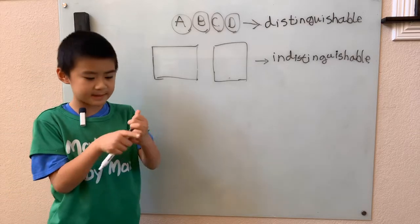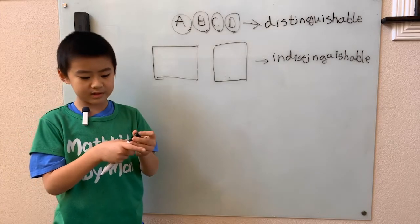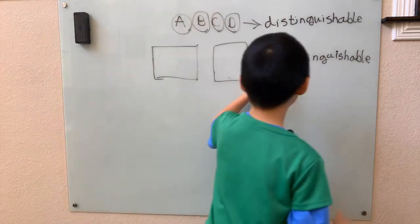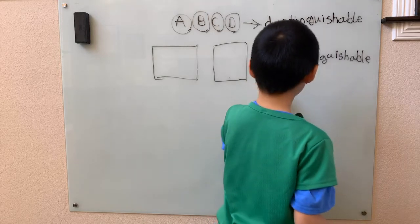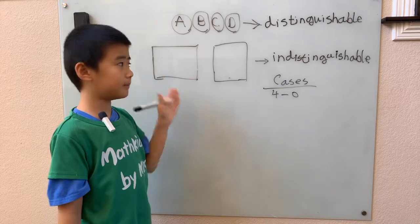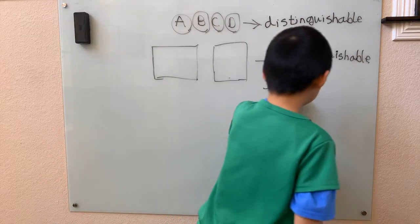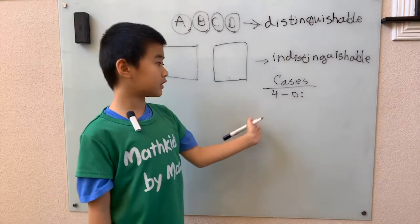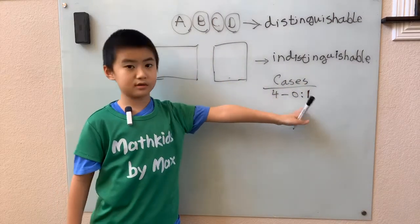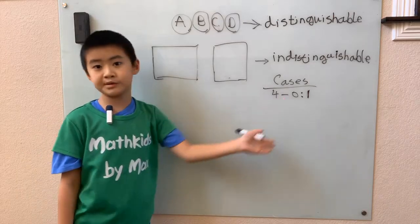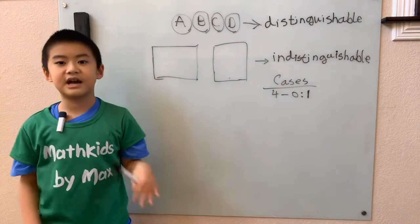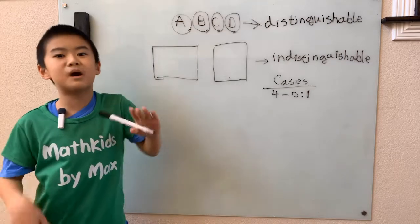Casework just means there are some things that could happen and we count how many ways each case could occur. So if I have the balls arranged four to zero — four balls in one box, zero balls in the other — that's one of our cases, and there's one possibility for that. Note that zero to four is the same as four to zero because the boxes are indistinguishable — they're the exact same boxes, and we care about what the balls are, not where they are.